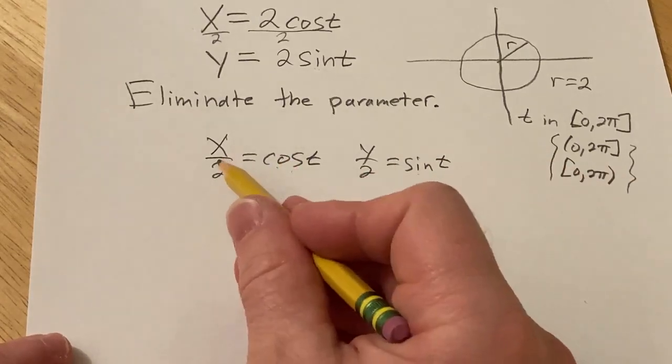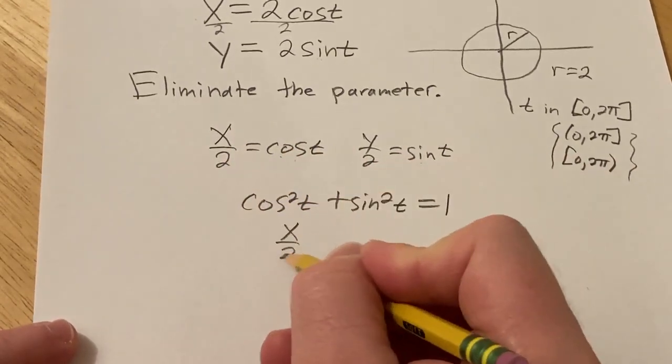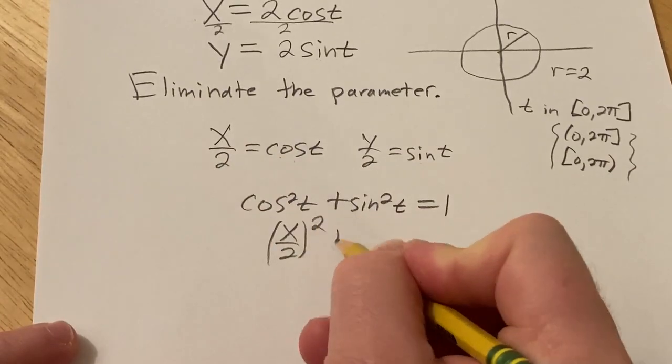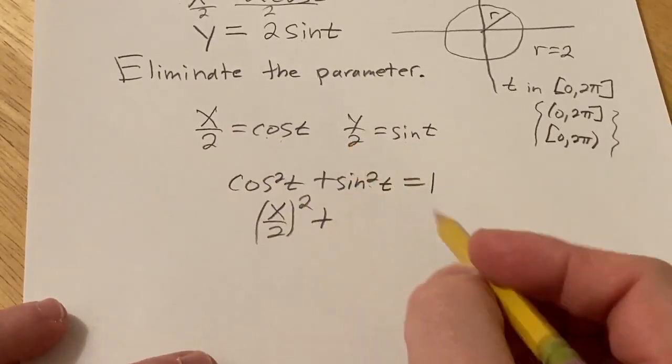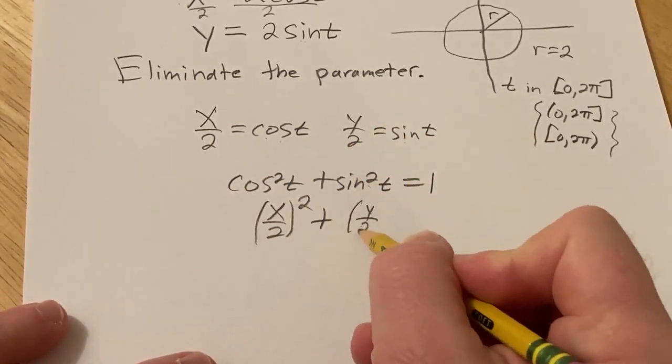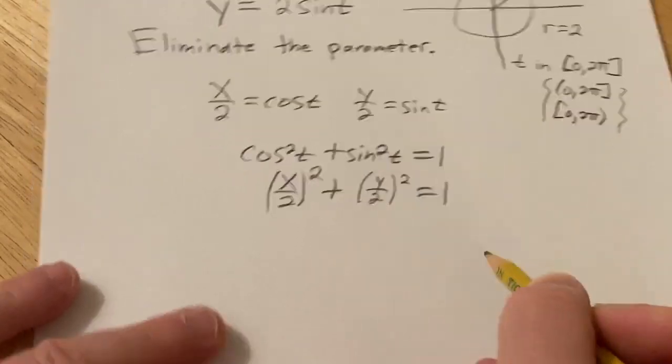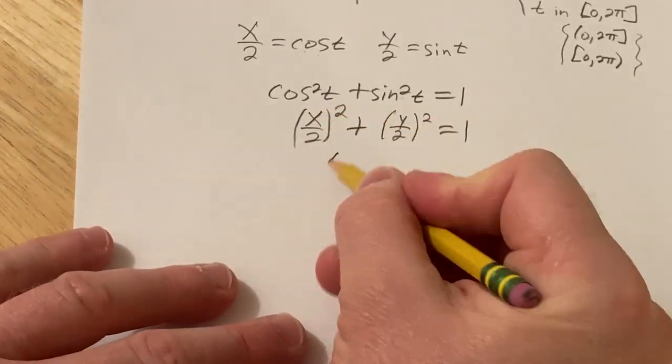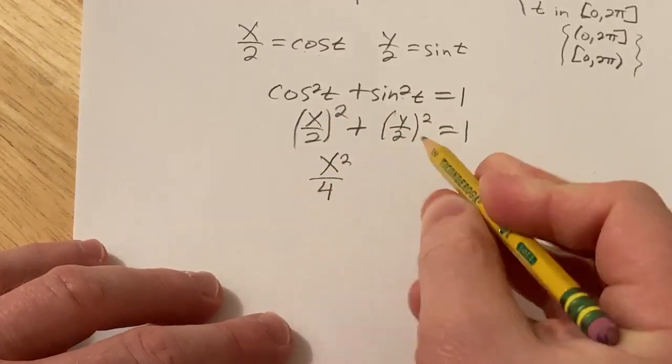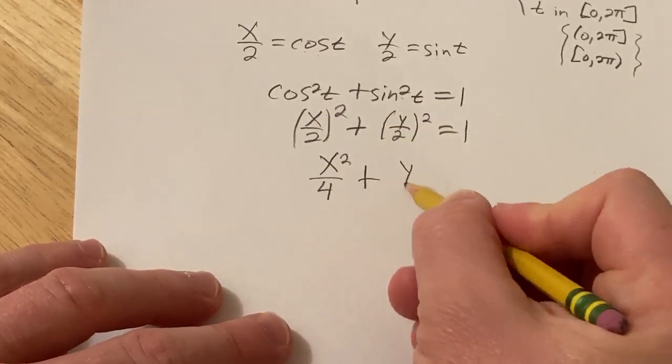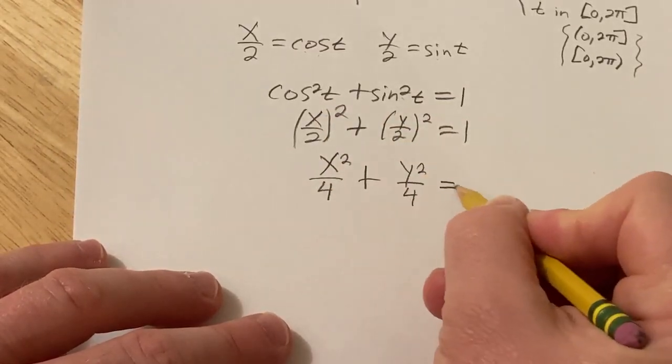And then you just replace the cosine with this, so this will be x over 2 squared, and then replace the sine with this, so that's y over 2 squared, and that's equal to 1. So that's going to be x squared over 4 plus y squared over 4 and that's equal to 1.